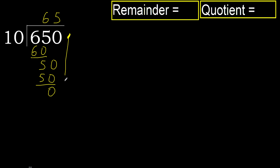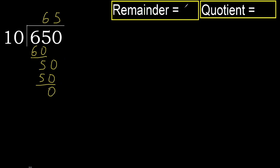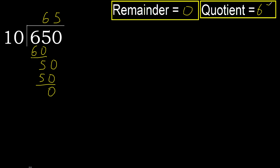That is not a number, therefore finish it. 650 divided by 10 is 65.